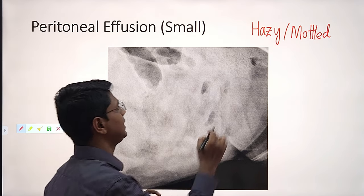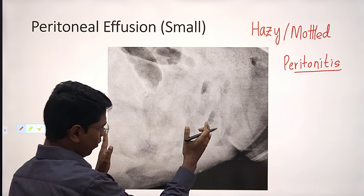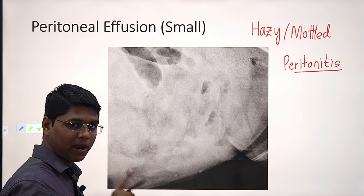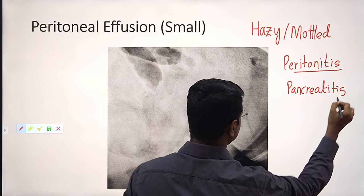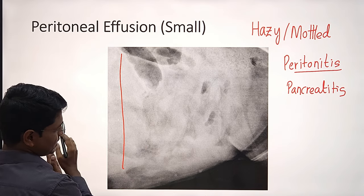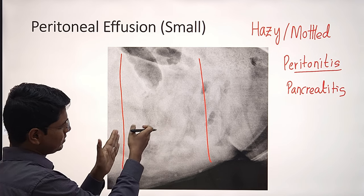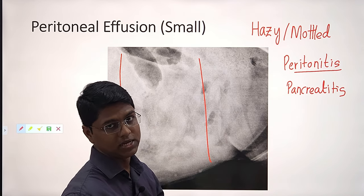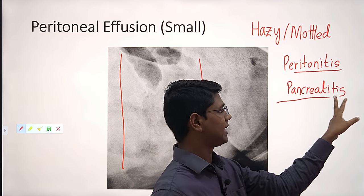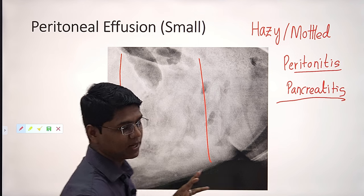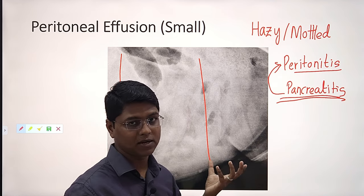The most common cause of peritoneal effusion is peritonitis. Also, this type of hazy or mottled appearance is found in case of pancreatitis, especially in the mid-abdomen — the slightly caudal portion of the cranial abdomen and this middle portion. If you find these characteristics, you may suspect focal peritonitis or pancreatitis. You have to do lab tests to establish whether there is pancreatitis. Pancreatitis and peritonitis can coexist.